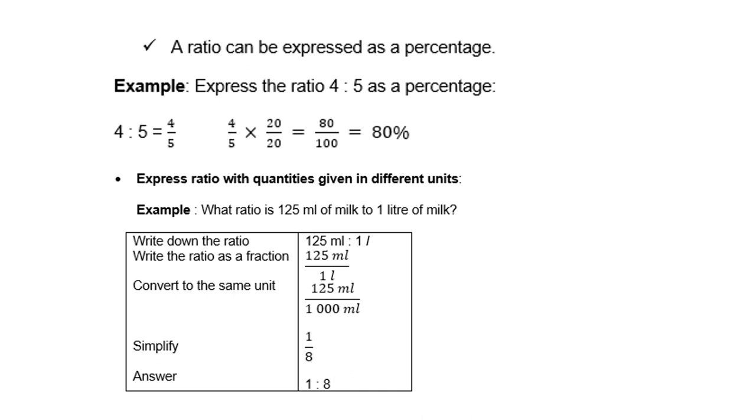Now a ratio can be expressed as a percentage. Example, express the ratio 4 is to 5 as a percentage. Remember, a ratio is also a fraction. So 4 is to 5 is the same as 4 fifths. And if you multiply that by 20 over 20, which is basically times 1, so it doesn't change 4 fifths. Then you multiply the numerators, which gives you 80, multiply the denominators, which gives you 100. And we all know that 80 out of 100 is 80%.